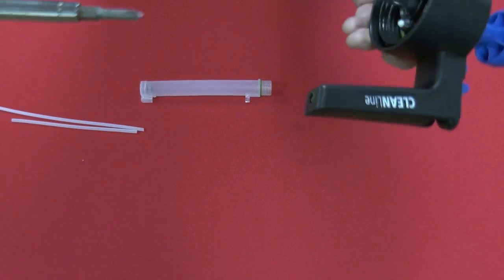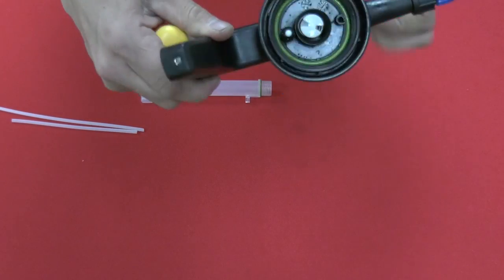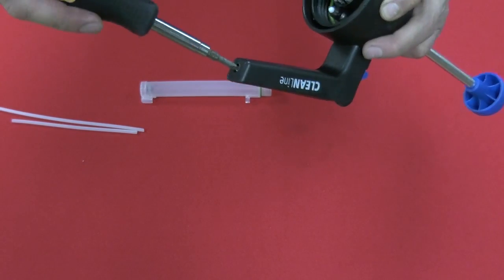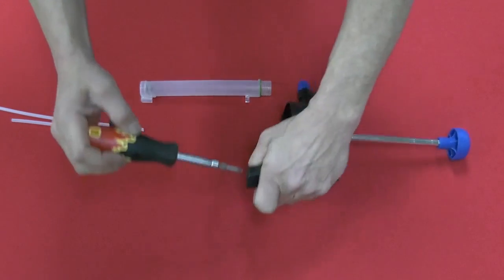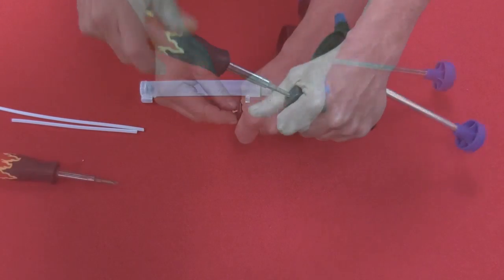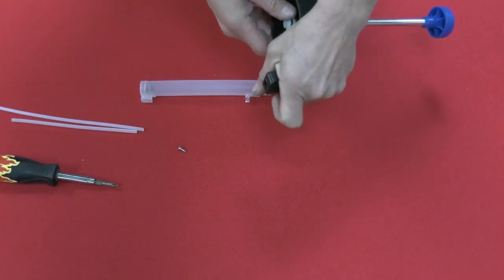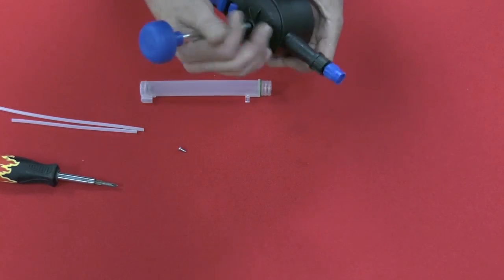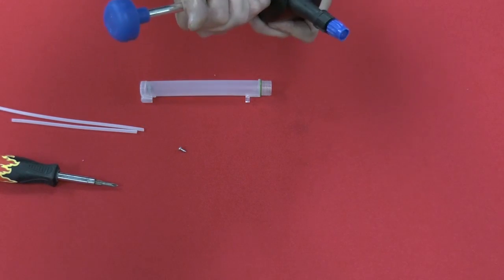Now to disassemble this further, you'll need a Phillips head screwdriver. There is one Phillips head screw on the bottom of the handle. Let's remove that now. Once you've removed the screw, the next step is to pry the two pieces apart.